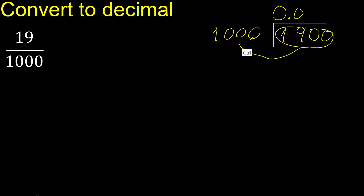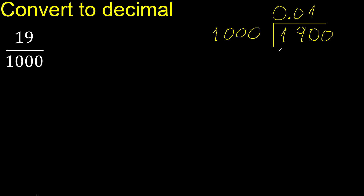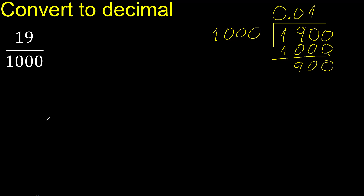Is not less, therefore one thousand. Multiply by which number is nearest to one thousand nine hundred but not greater? Multiply by two is two thousand — is greater. Therefore multiply by one is one thousand. Subtract — there is no number that goes down.